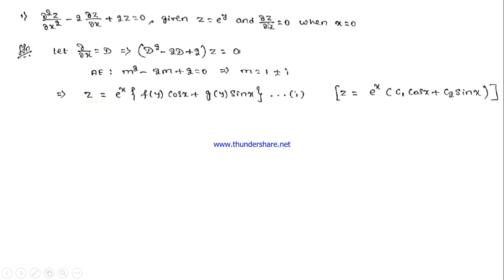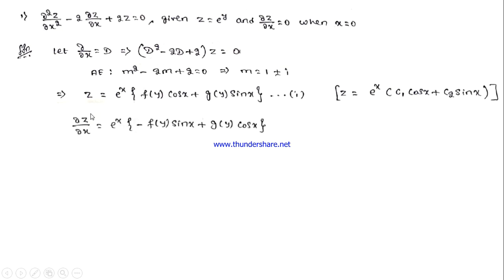Given two conditions, we need to find f(y) and g(y). We also need ∂z/∂x, so differentiate equation 1 with respect to x. Since eˣ and (c₁ cos x + c₂ sin x) are both functions of x, we apply the product rule: ∂z/∂x = eˣ(−f(y) sin x + g(y) cos x) + eˣ(f(y) cos x + g(y) sin x). This is equation number 2.